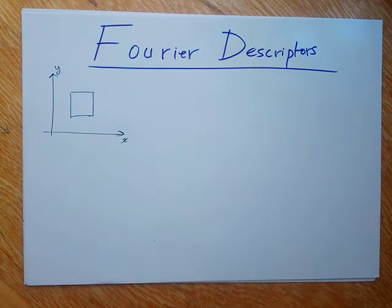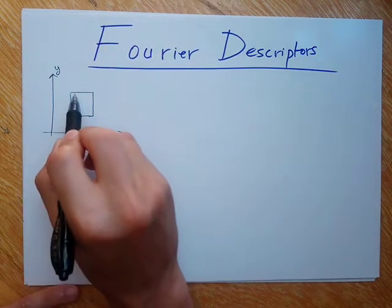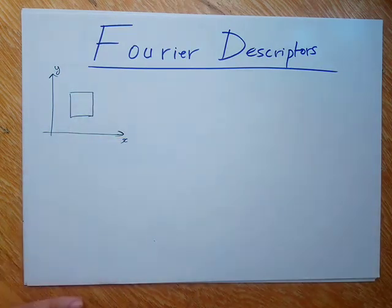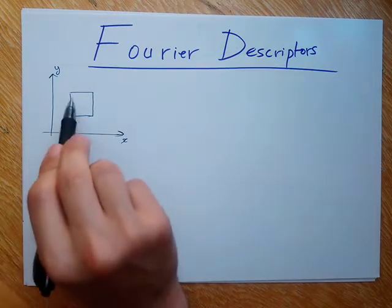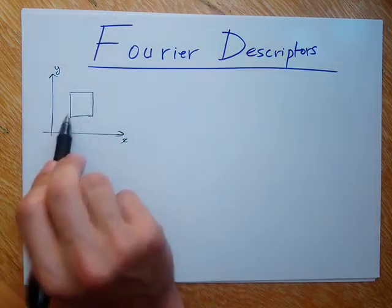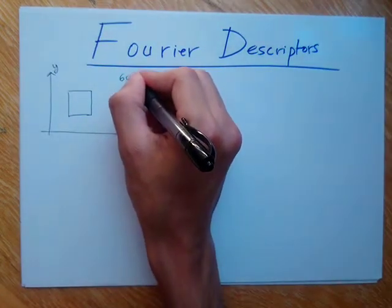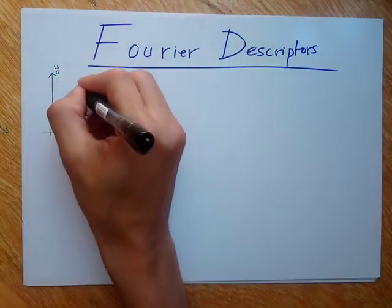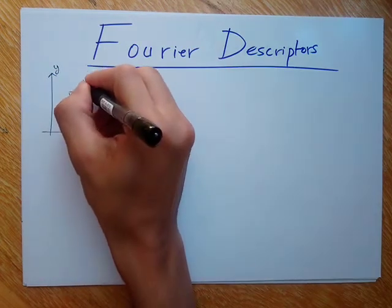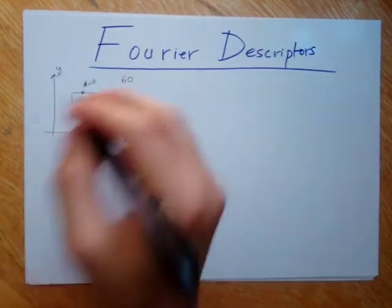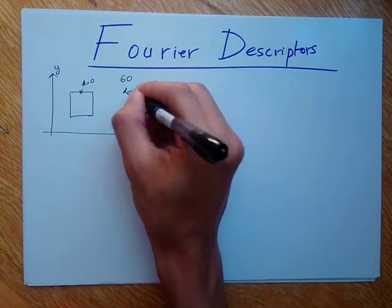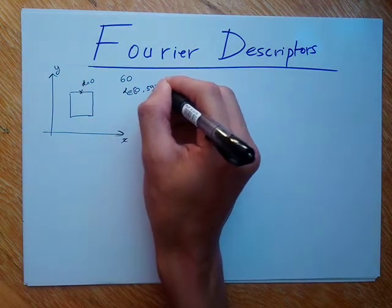What you need to understand here is that I have pixels — edge pixels — that represent this square, and I have a limited number of pixels. Say, for example, that the number of edge pixels that represent this square is 60. What I do is consider a given edge pixel as a starting point — say, this edge pixel here. So this would be k equal to zero, and k would be between zero and 59.